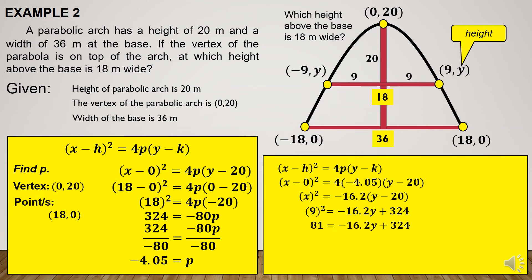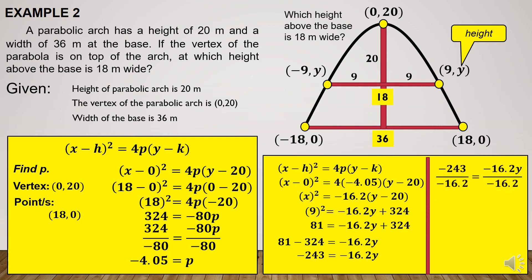So, 9 squared is 81, equal to negative 16.2 times y plus 324. To find the value of y, we transpose 324 to the other side, obtaining 81 minus 324 equals negative 16.2 times y. Then negative 243 equals negative 16.2 times y. Dividing both sides by negative 16.2, the value of y is 15. So the height is 15 meters.